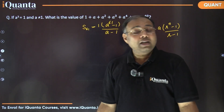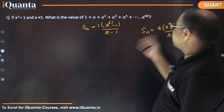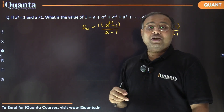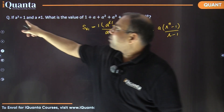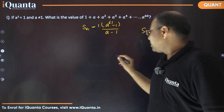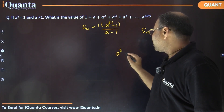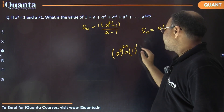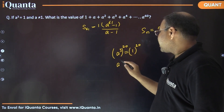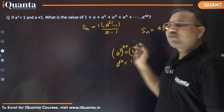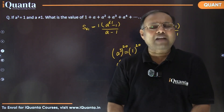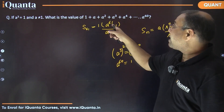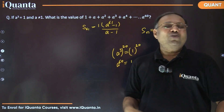We are almost done. Using the sum of n terms of a GP formula we have the expression. Now, since a³ = 1, if we raise it to the power 20 we get a⁶⁰ = 1. But here we have a⁶¹, so what's the difference? a⁶¹ = a⁶⁰ · a, and since a⁶⁰ = 1, a⁶¹ = a.